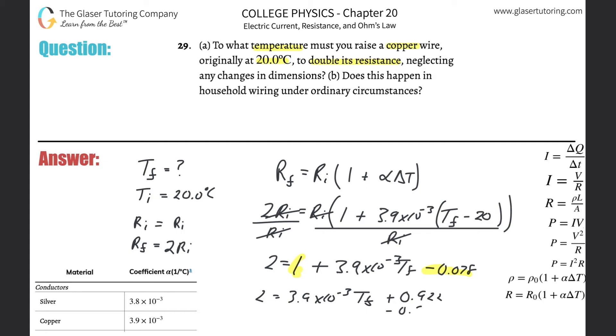Wunderbar. Now let's take 2 and subtract that value from it, so we get a value of 1.078, and that is equal to 3.9 times 10 to the minus 3 multiplied by the final temperature. So what do I need to do here? I need to divide this guy out. Since I ran out of space I'm not going to write it down, I'm going to take the 1.078 and divide it by 3.9 times 10 to the minus 3.